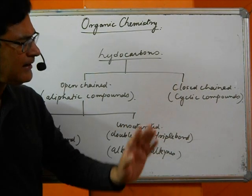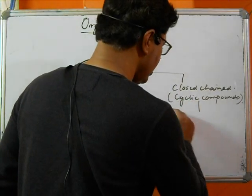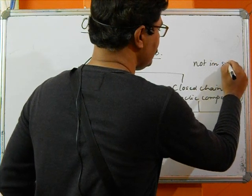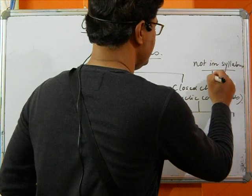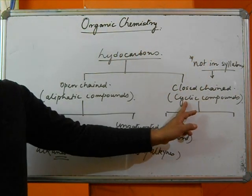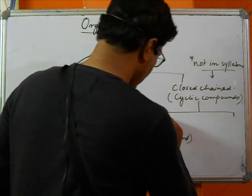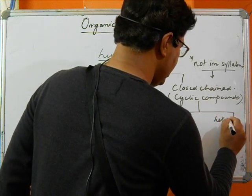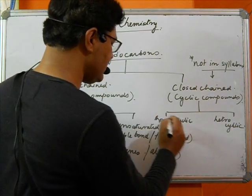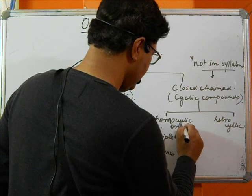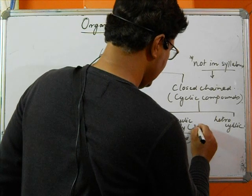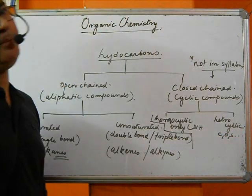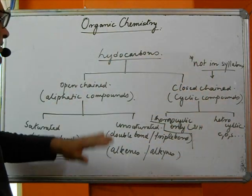Coming to the cyclic compounds — note this part is not in the main syllabus. Closed-chain compounds, that is cyclic compounds, are divided into homocyclic and heterocyclic. Homocyclic means the ring contains only carbon and hydrogen. Heterocyclic means the ring contains carbon along with other elements like oxygen or sulfur.